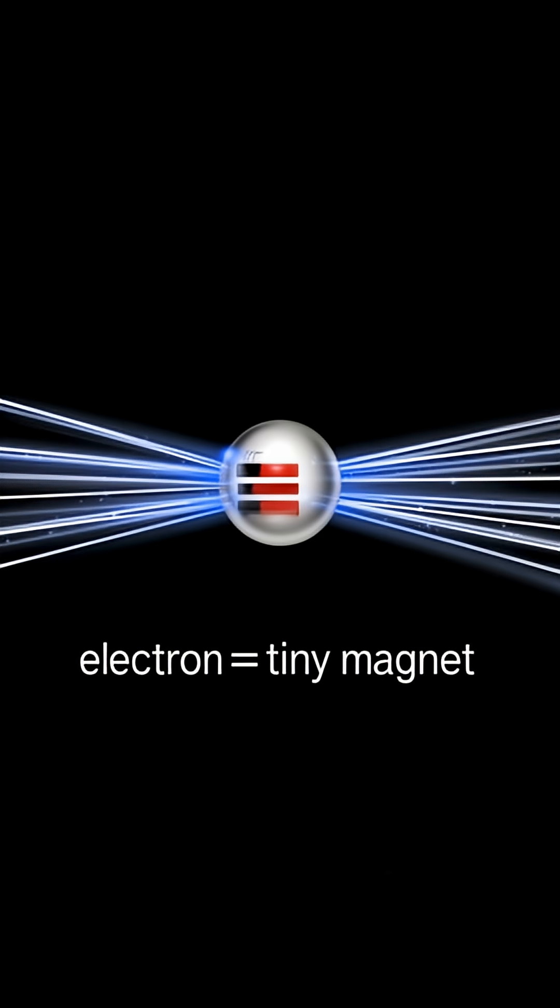Physicists test this with one of the cleanest objects in nature, the electron, which behaves like a tiny magnet.